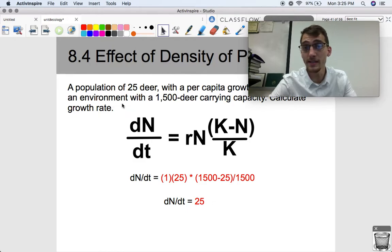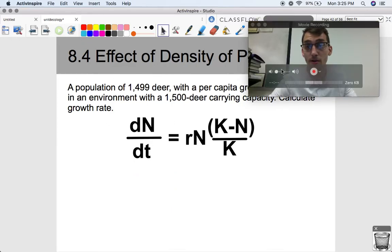So we expect the population to grow by 25 deer, which is a lot. This population is going to double. At this point in this population's development, it's expected to double based on our mathematics. So that's a pretty big growth rate.